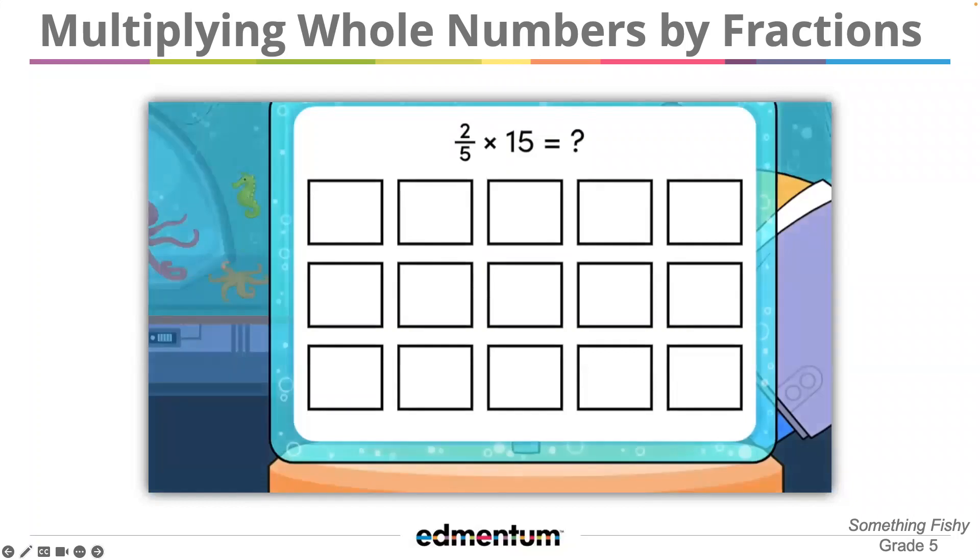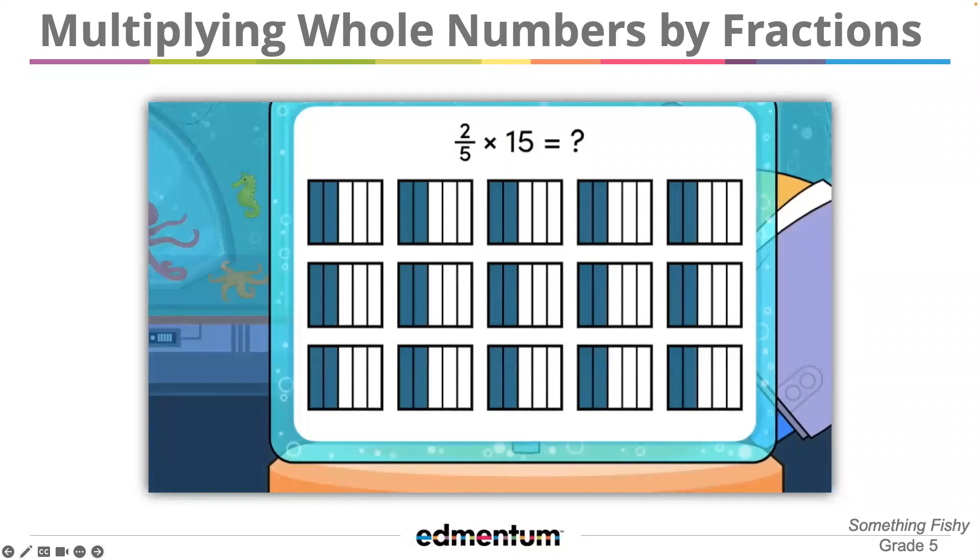Since two-fifths of the fish are angelfish, we can shade two-fifths of each rectangle. Wow! That's a lot of shaded parts! Should we try to count them all? Well, let's think about this. We know that two parts are shaded on each rectangle, and there are 15 rectangles. Two times 15 is 30, so we have 30 shaded parts in all. Good thinking!